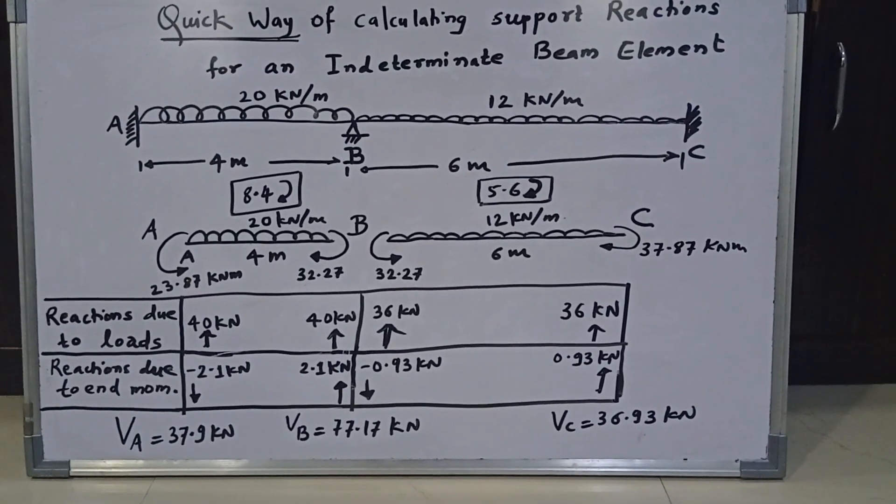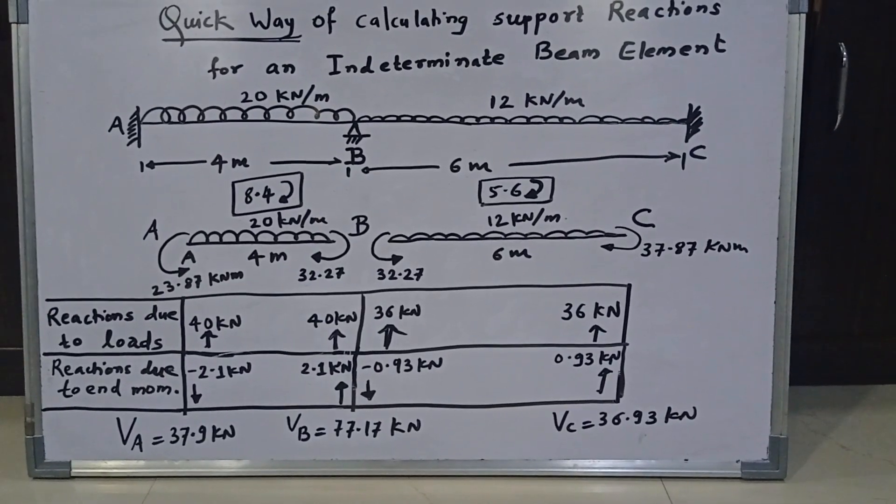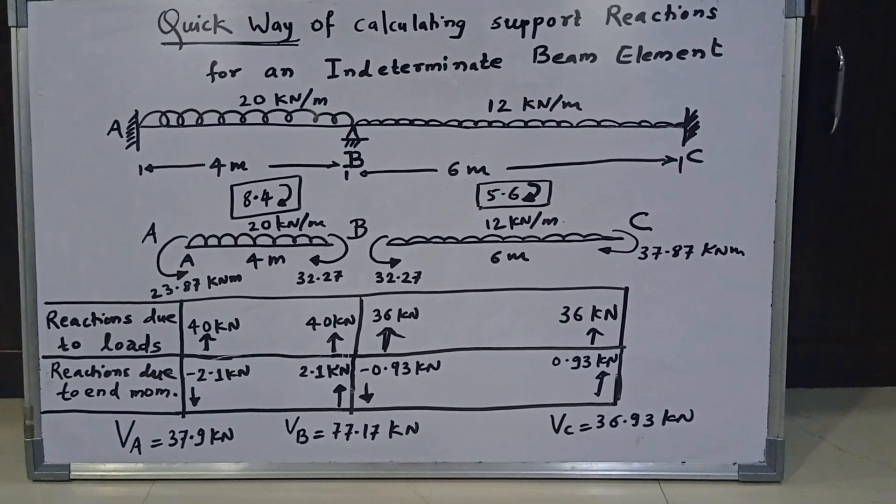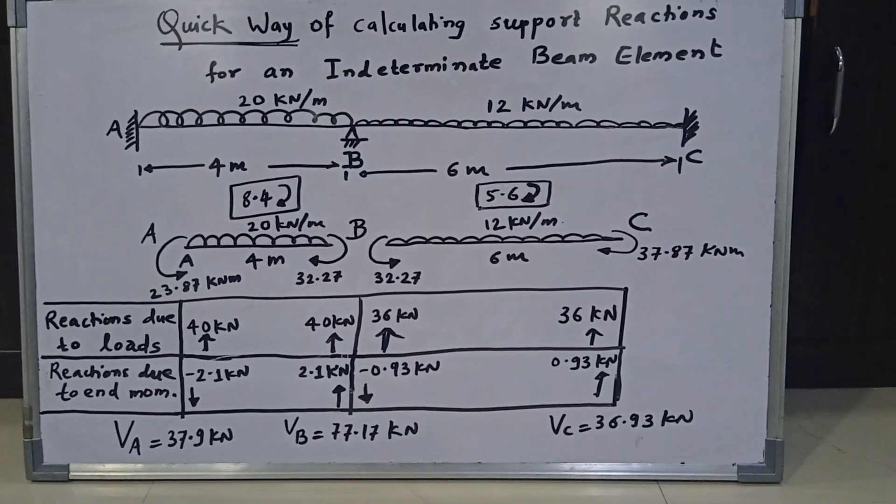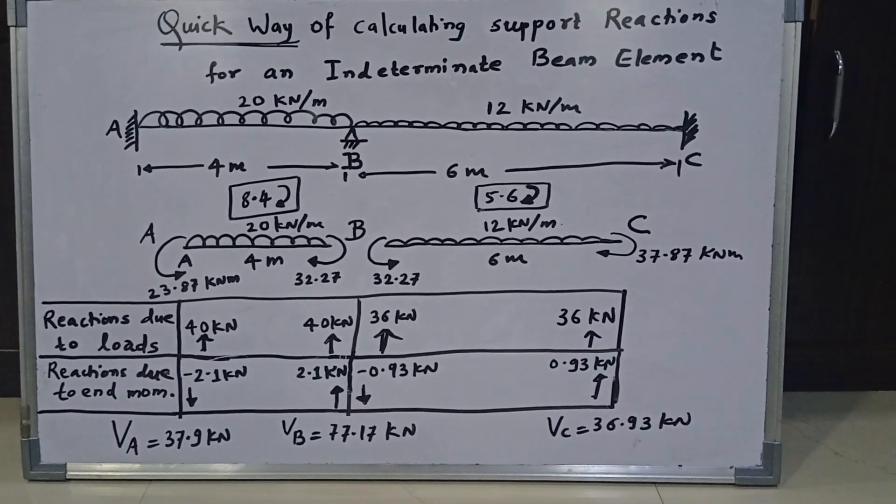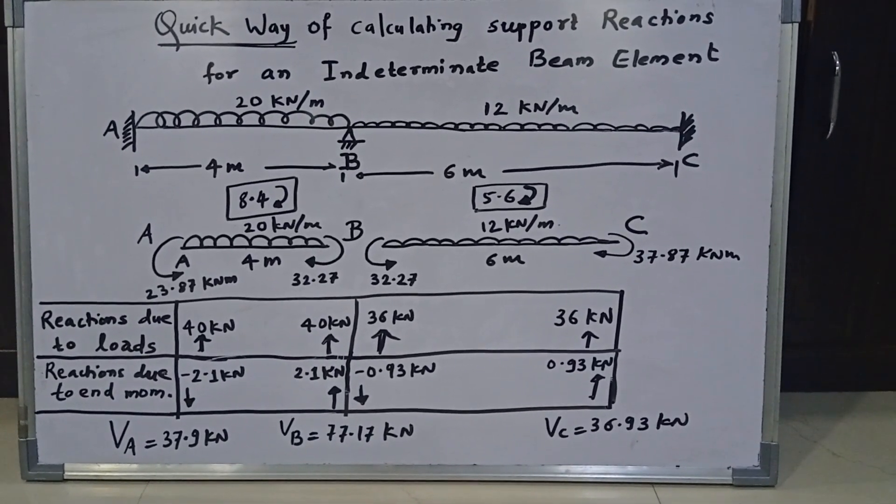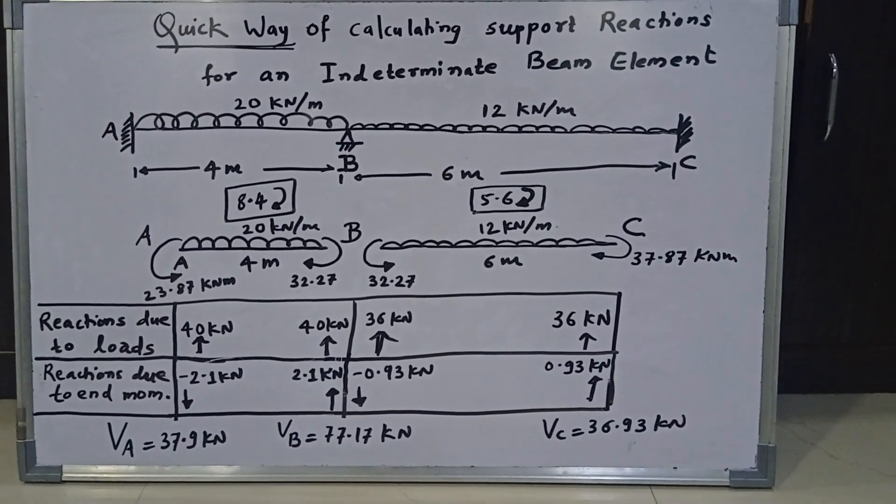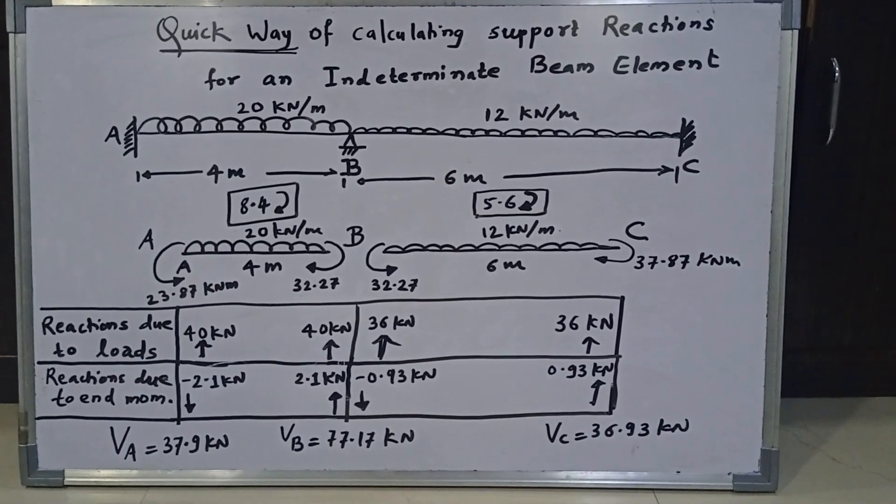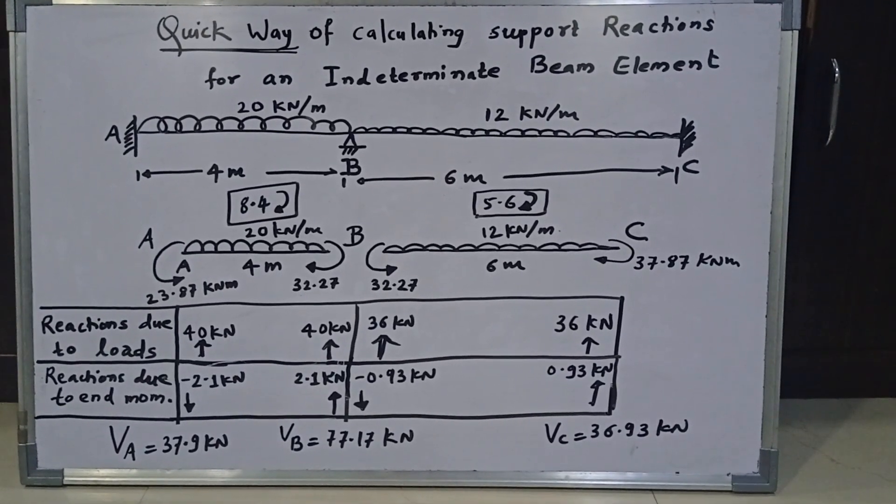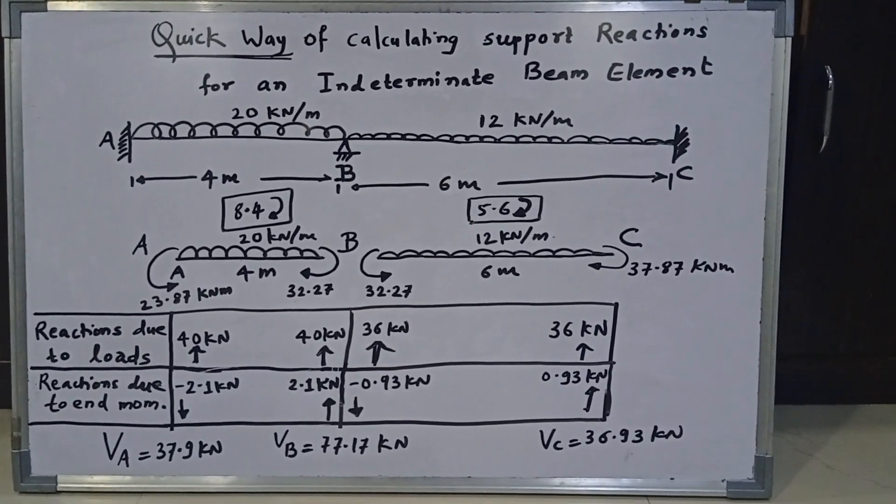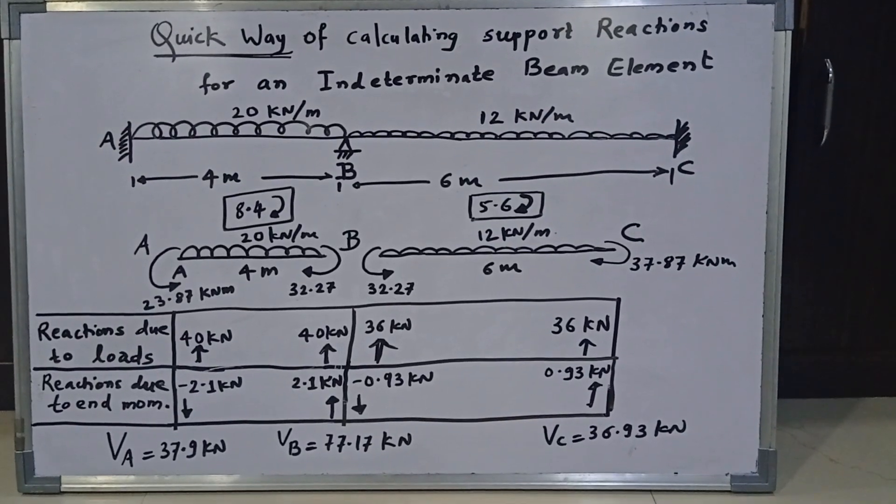So all reactions are upwards because you have got all the answers as positive. Now, we can just take a simple check also that if you look at diagram number 1, 20 into 4, that is 80 kN downwards, 12 into 6, that is 72 kN downwards. Both combined, the beam is subjected to a downward effect of 152 kN. Now at the bottom, if we add VA, VB and VC, it will be again 152 kN upwards. So 152 downwards minus 152 upwards, again, it will be 0 as required.